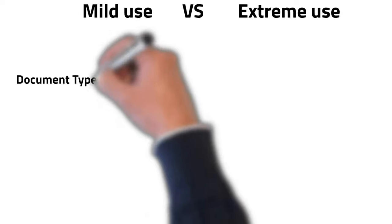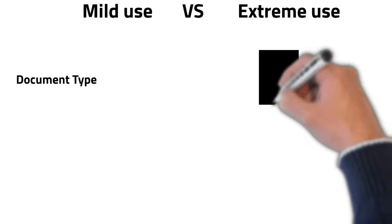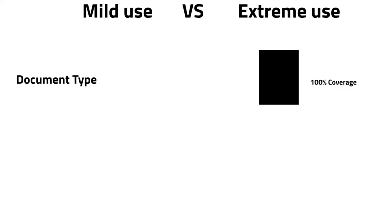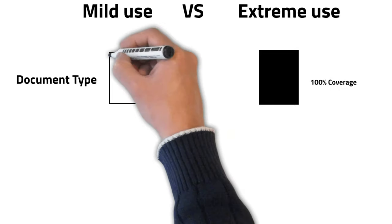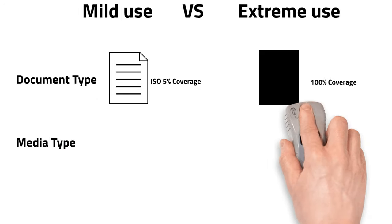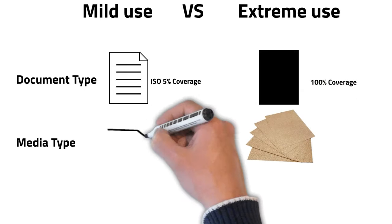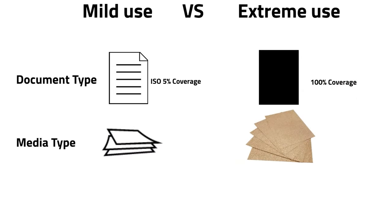Firstly, document type. Printing a document with full images requires 10 to 20 times more usage of the laser on the drum unit compared to a text-only document, often referred to as documents with 5% coverage as defined by ISO 19752. Secondly, printing media type. Printing on larger and rougher paper leads to more wear and tear on the parts than printing on smaller and smoother paper.